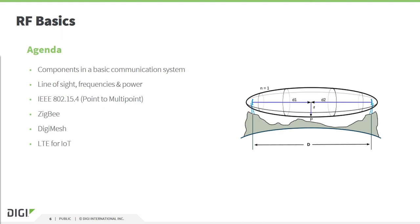The agenda for today, in order to cover these RF basics, is to show you the components in a basic communication system, and after that we will try to show you some of the concepts and parameters which will be involved, and later on we will show you some of the protocols that Digi can offer.